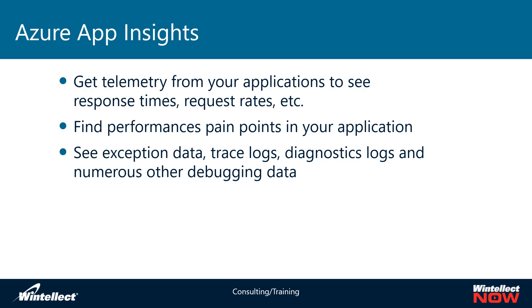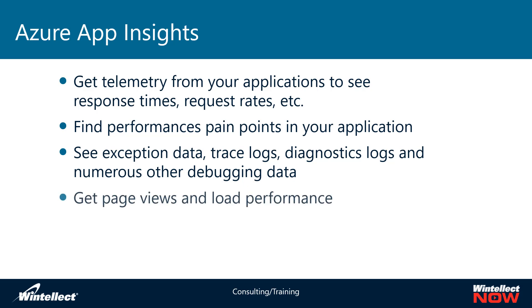With .NET, .NET Core, and Node.js, for instance, you can get down to the line level and see what the exact conditions were whenever an exception occurred. You can see what the variables were, and you can even do dumps, get those dumps, and replay back an exception with the values that were set in memory whenever that exception occurred. These kinds of tools are among the most widely used features in App Insights when it comes to application monitoring.